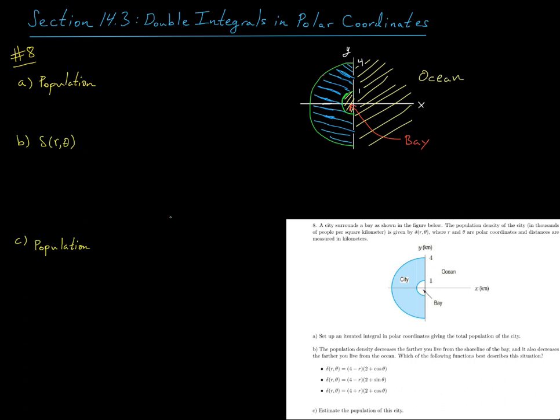Okay, so since we're given the density function delta, if I take that density function and multiply it with our little dA differential area element, this product here is going to tell me the population in this little differential area.